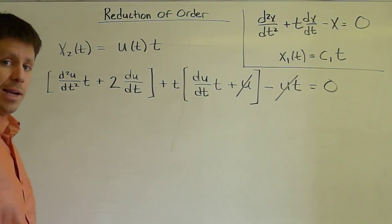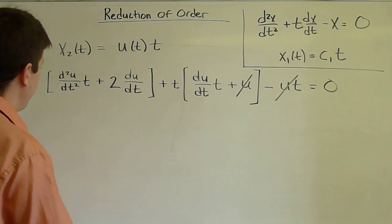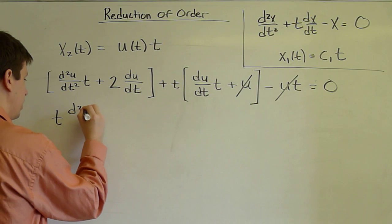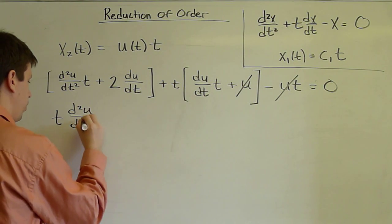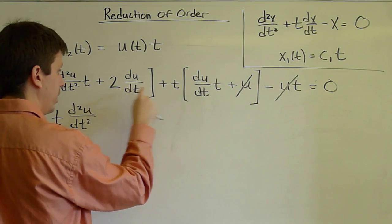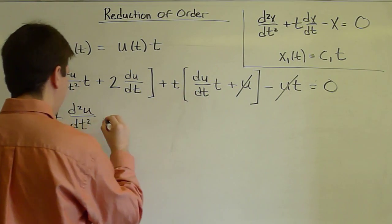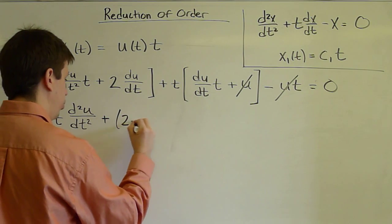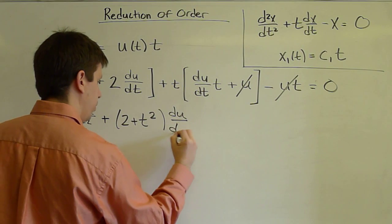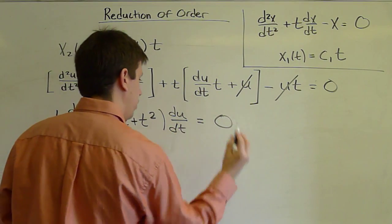And if we now collect like derivatives of u, we have t times the second derivative of u/dt squared plus (2 + t) times t. So (2 + t²) du/dt equals zero.